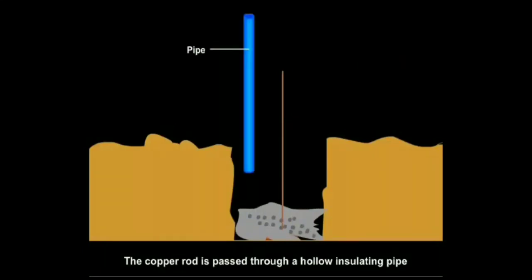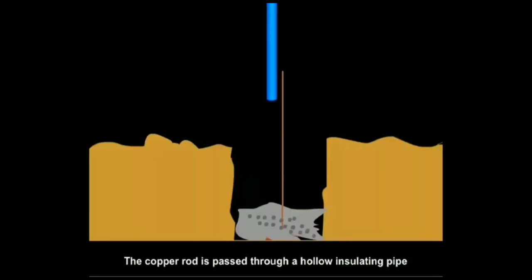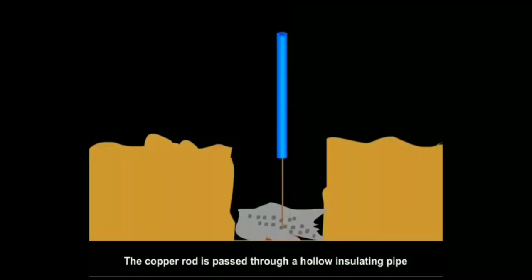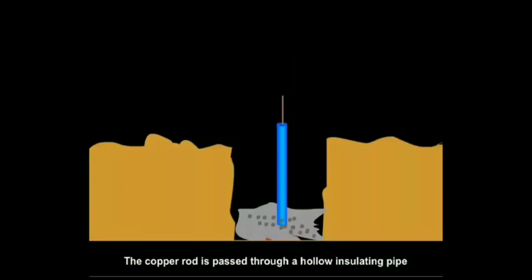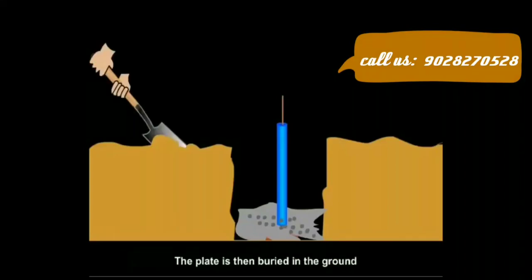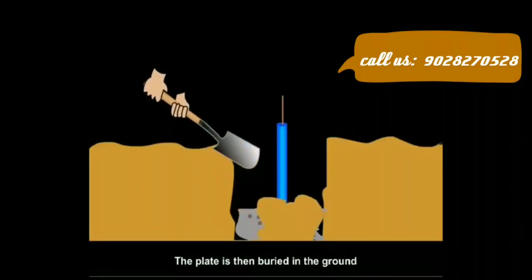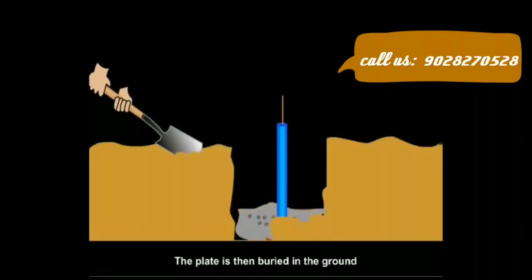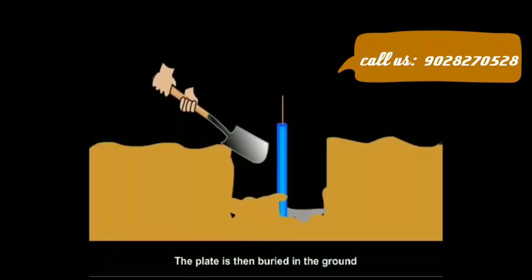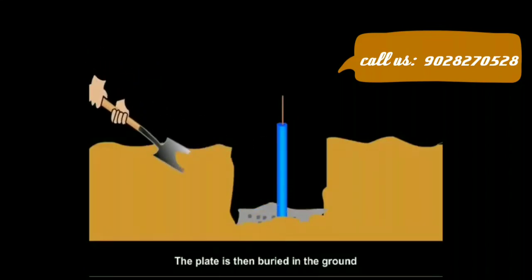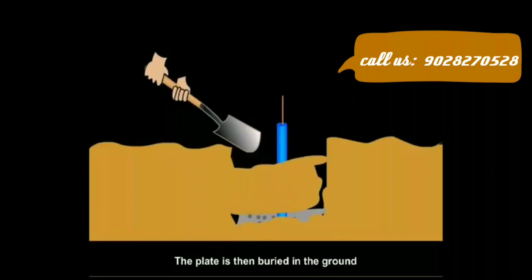The copper rod is protected by a hollow insulating pipe to safeguard life in soil and accidental touching by humans. The plate and rod are then buried in the ground.